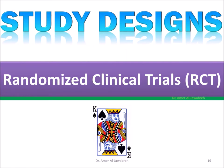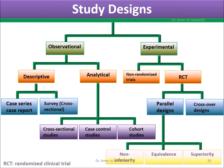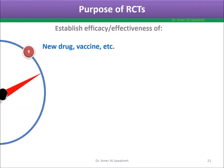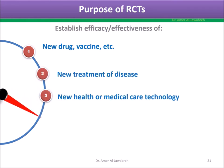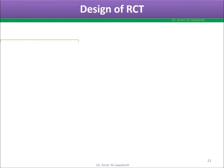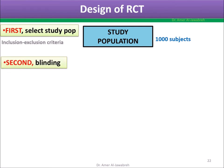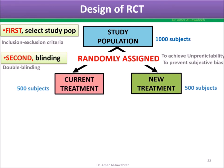Randomized clinical trials — the king of studies. RCT is an experimental type of design, which is superior to observational designs. Purpose of RCTs: to establish efficacy and effectiveness of a new drug or vaccine, new treatment of disease, new health or medical care technology, a new screening program, or a new way of organizing and delivering health services. Design: First, select study population using assigned inclusion-exclusion criteria. Second, randomly assign study groups by blinding method to achieve unpredictability and to prevent subjective bias.